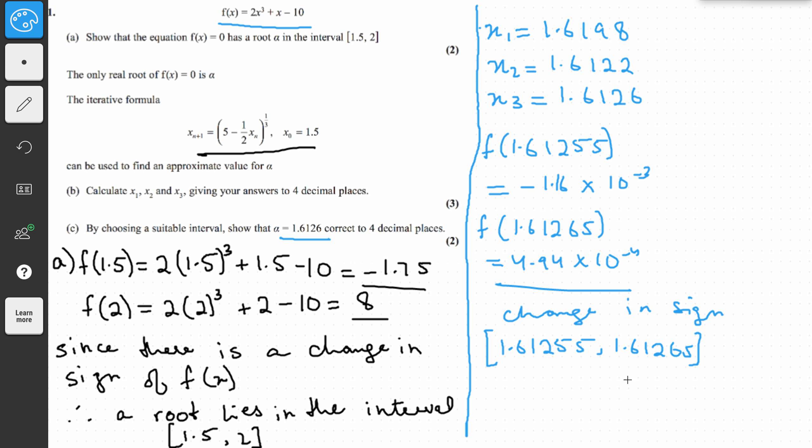And this, if we write it down correct to 4 decimal places, is 1.6126 correct to 4 decimal places, which means that alpha is 1.6126 correct to 4 decimal places.